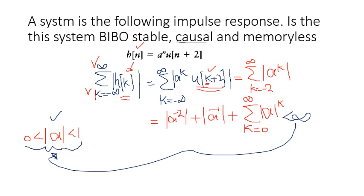The second question is whether the given system is causal or non-causal. For a causal system, H(K) = 0 for K < 0. Looking at the given impulse response, H(K) is non-zero for negative K values. So this system is non-causal — it is an example of a non-causal system.